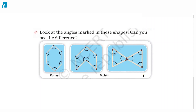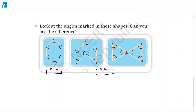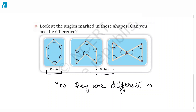Look at the angles marked in these shapes — can you see the difference? This is the figure made by Rohini, and these are the two figures made by Mohini. Yes, they are clearly different. They are different in shapes and angles; they have different angles and different shapes. Each figure has a different shape and a different angle.